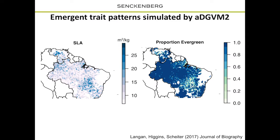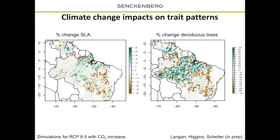We can also look at trait distributions: specific leaf area and the proportion of evergreen trees simulated by the model. We see dominance of evergreen trees in forest areas, while in savannah areas, deciduous and evergreen trees co-dominate. There is also a clear pattern of higher SLA in the Cerrado and lower SLA in forest areas.